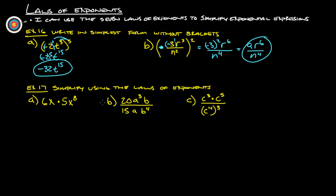Simplify using the laws of exponents. Make that x to the 1st. 6 times 5 — as long as these are all multiplied together with no addition or subtraction, we can multiply them. 6 times 5 is 30, and x to the 1st times x to the 8th is x to the 9th.